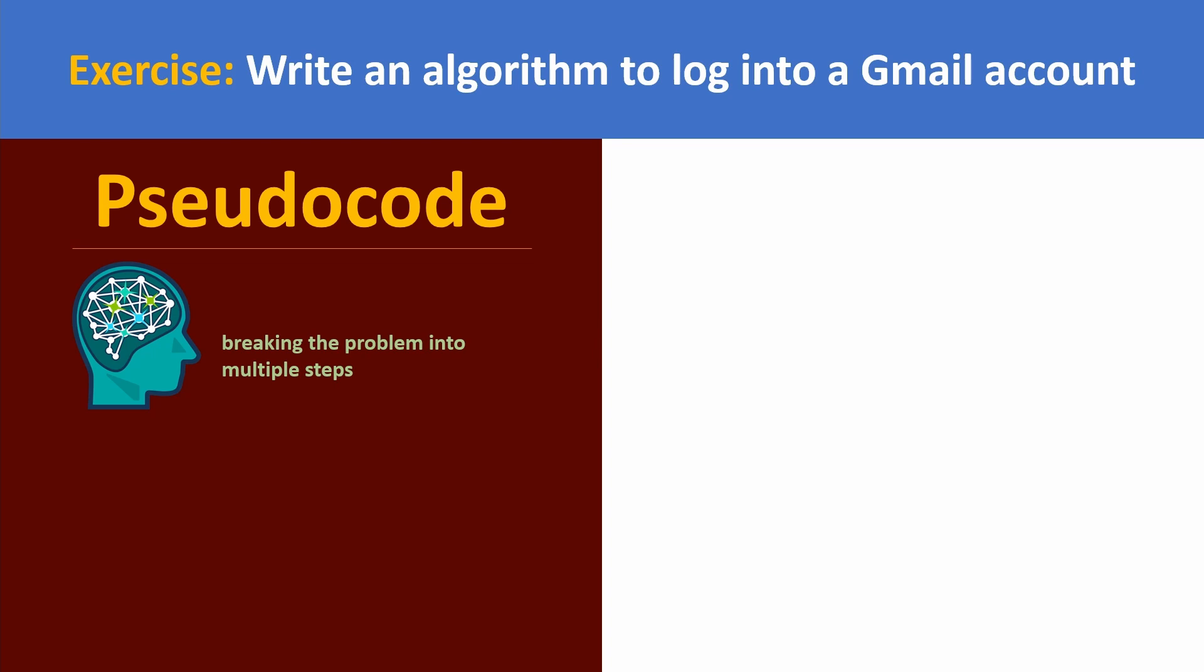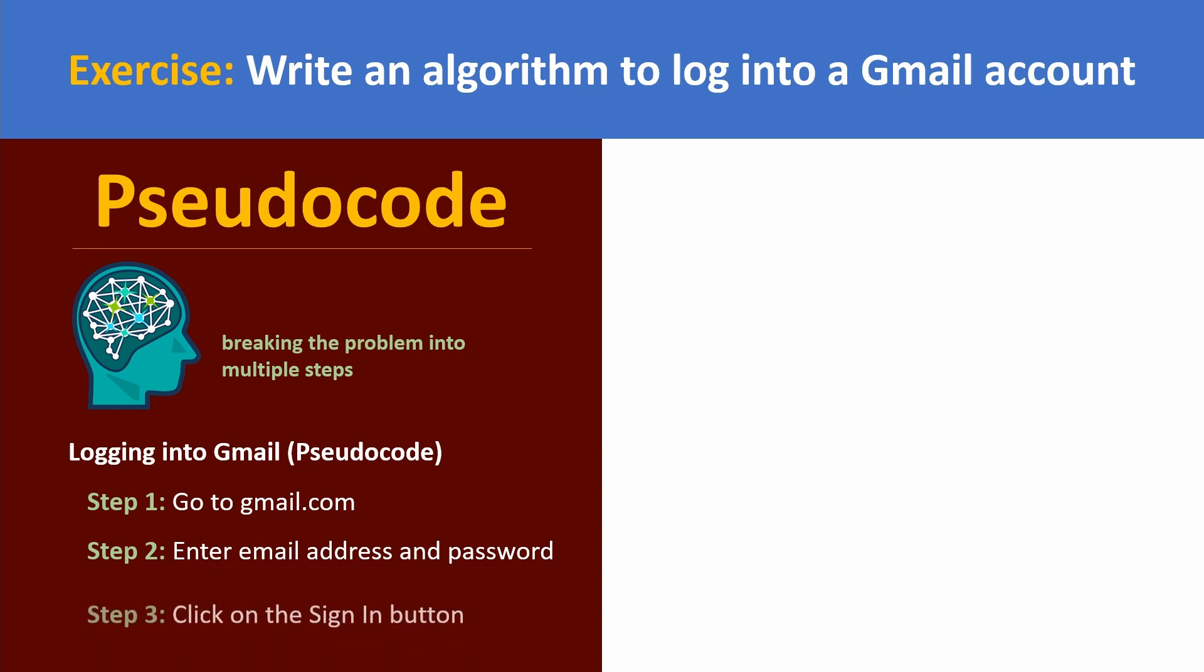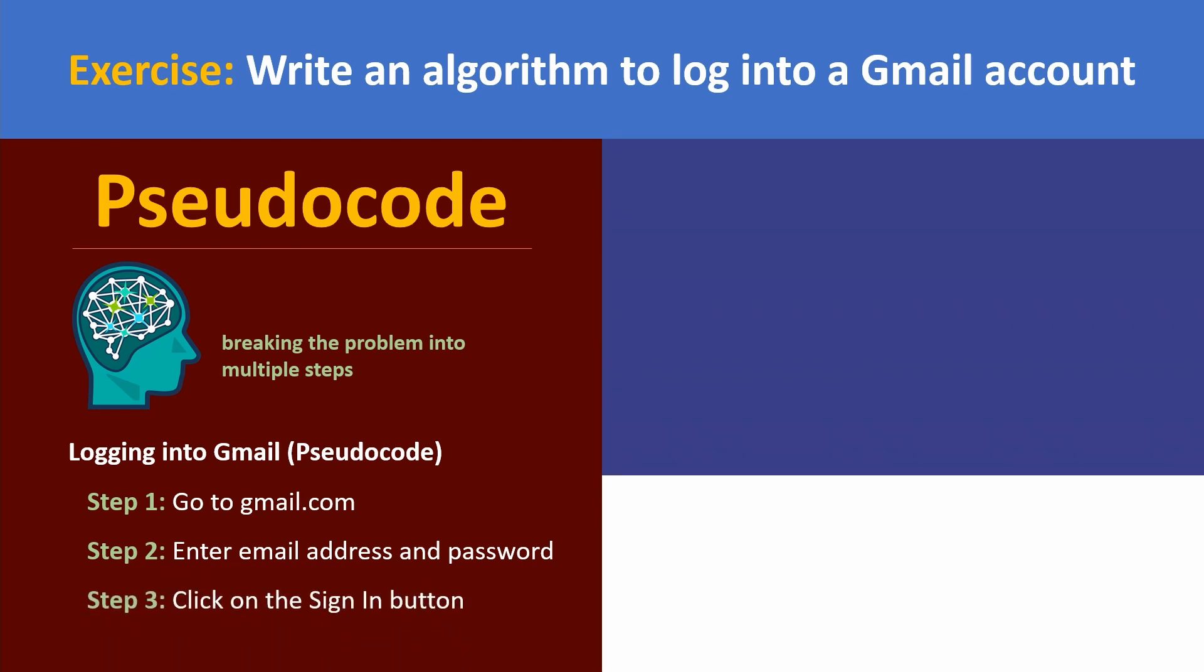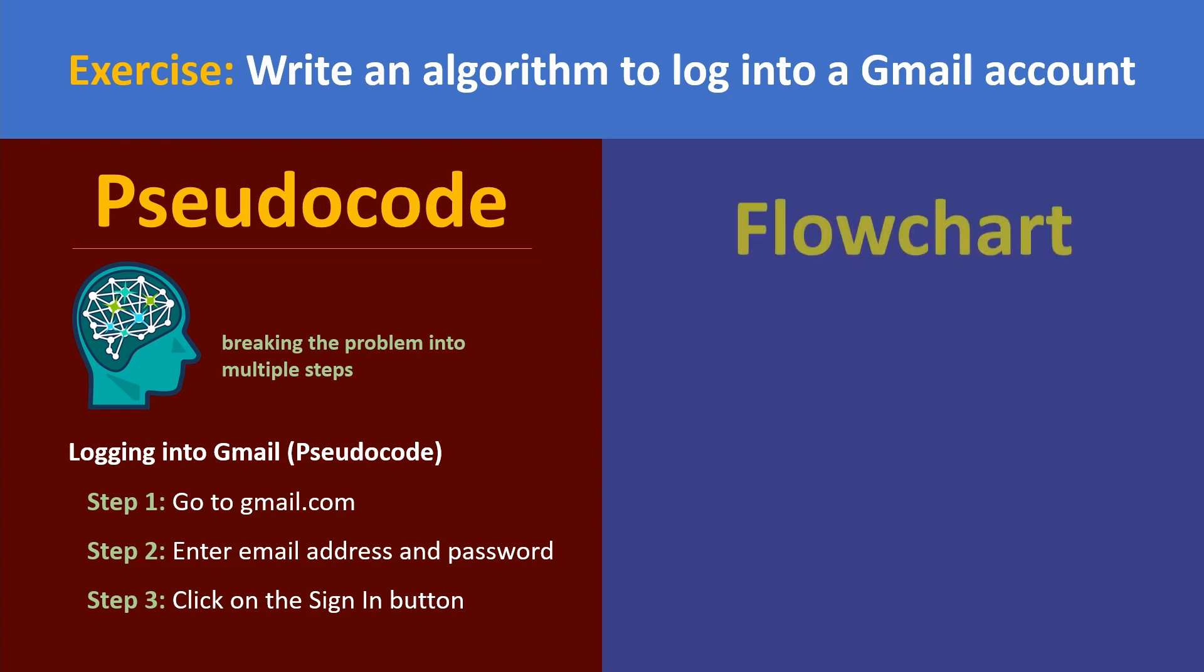So in pseudocode, we will write our algorithm as follows: Step 1, go to gmail.com; Step 2, enter the email address and password; and Step 3, click on the Sign In button. Now let's write the same algorithm using a flowchart.